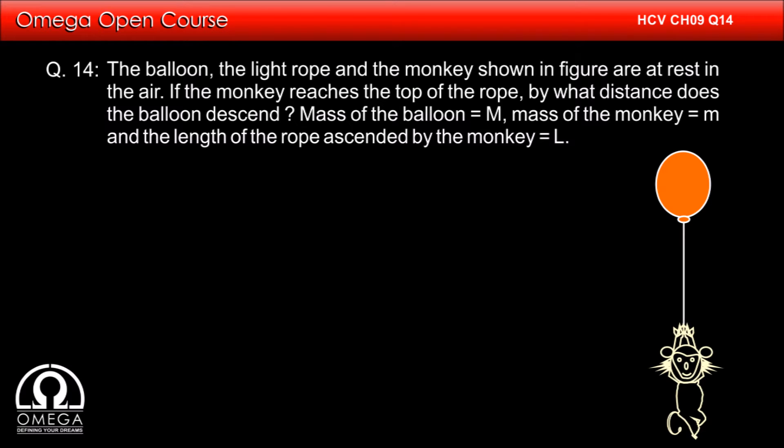The balloon, the light rope and the monkey shown in the figure are at rest in the air. If the monkey reaches the top of the rope, by what distance does the balloon descend? Mass of the balloon is capital M, mass of the monkey is m, and the length of the rope ascended by the monkey is L.